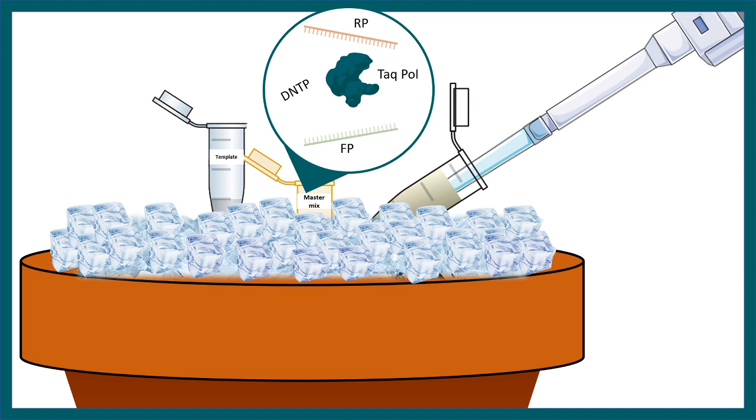In normal PCR mix, when we add forward reverse primer, TAC polymerase, DNTP in the master mix, some reaction already starts in that situation.